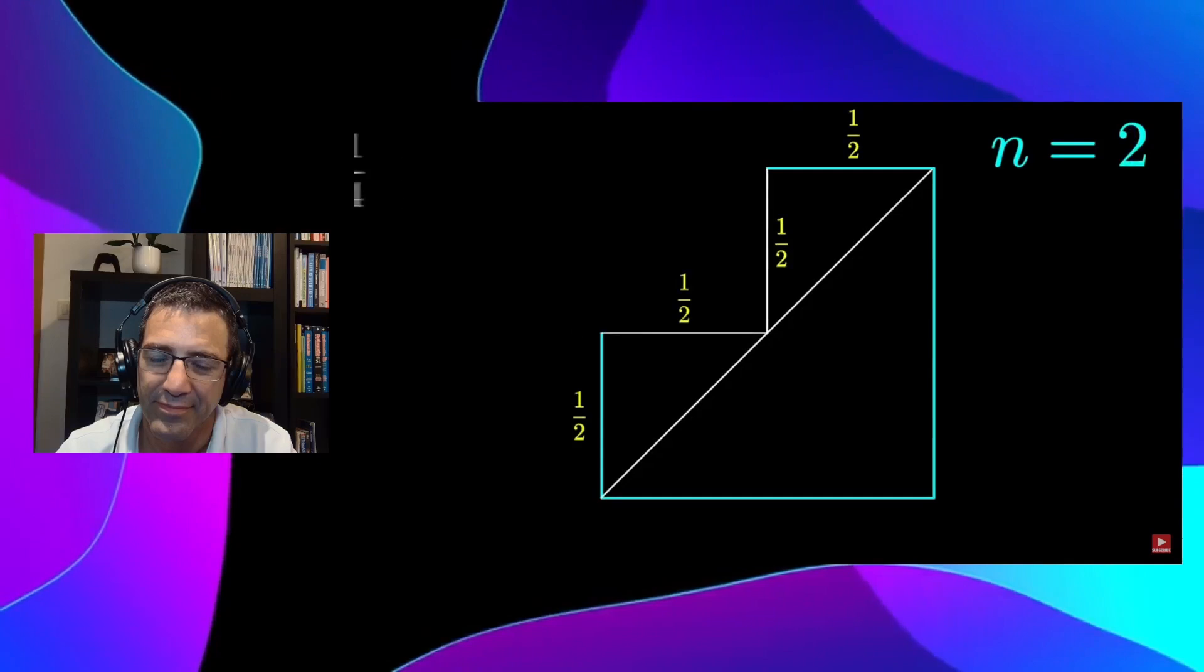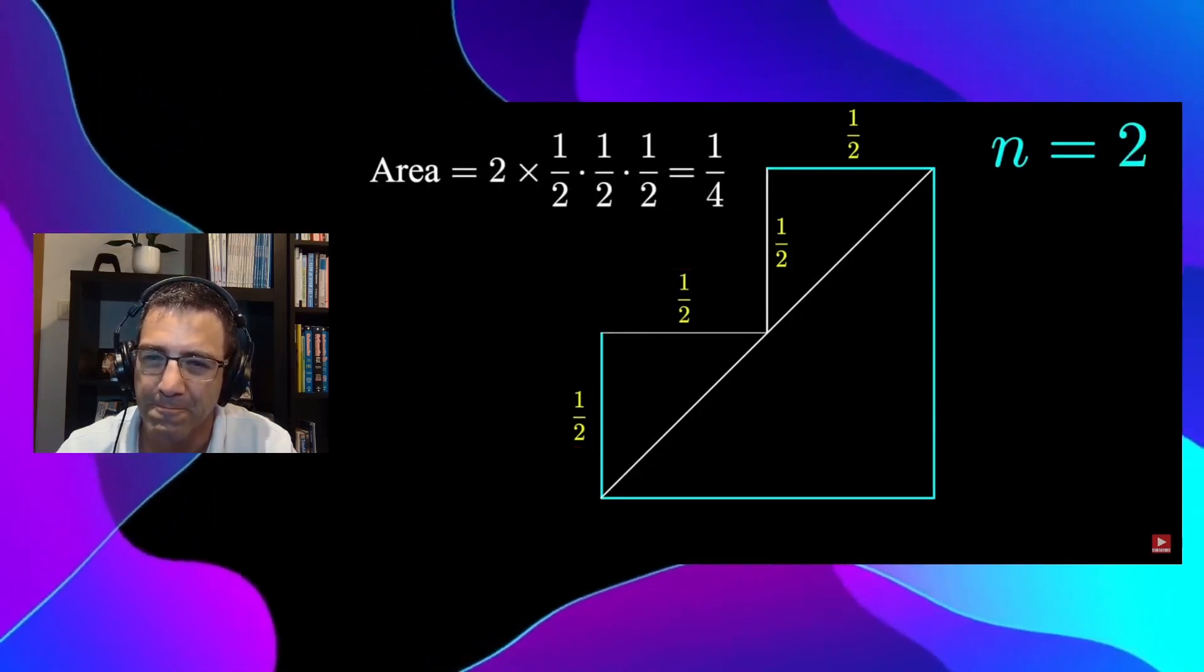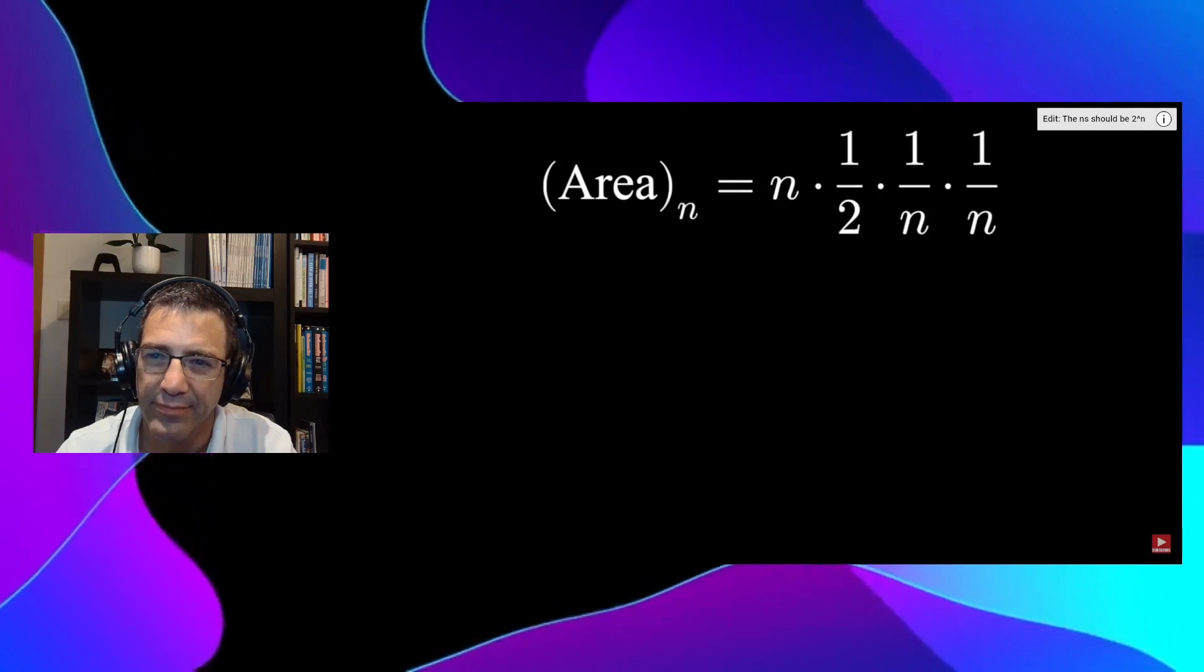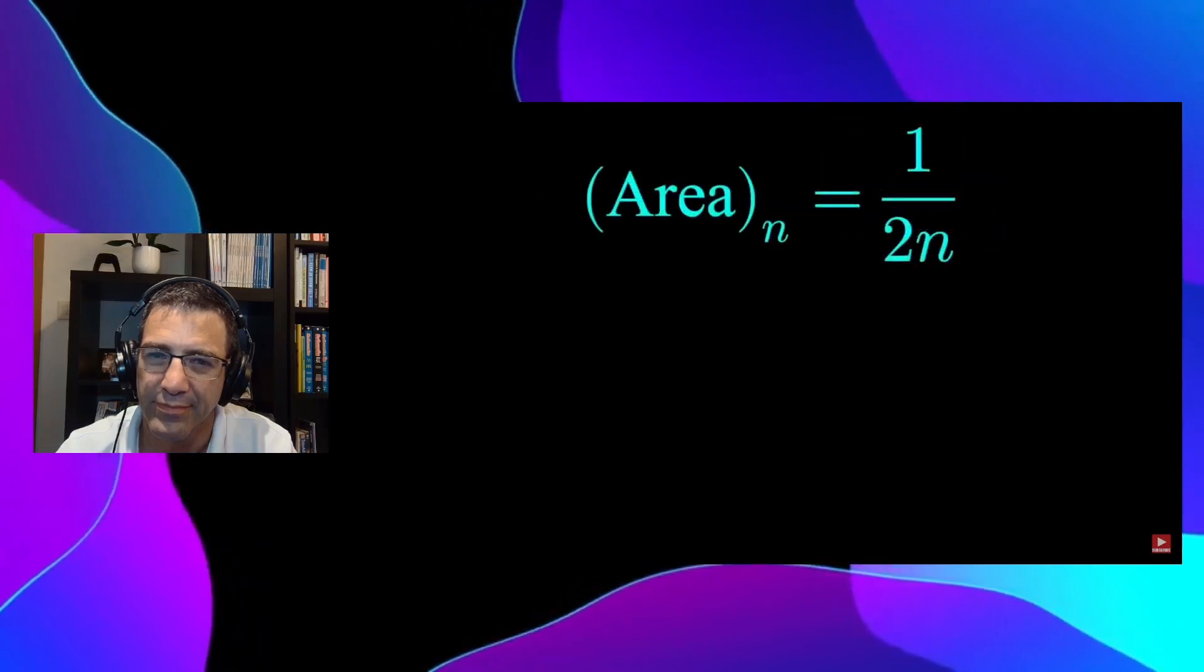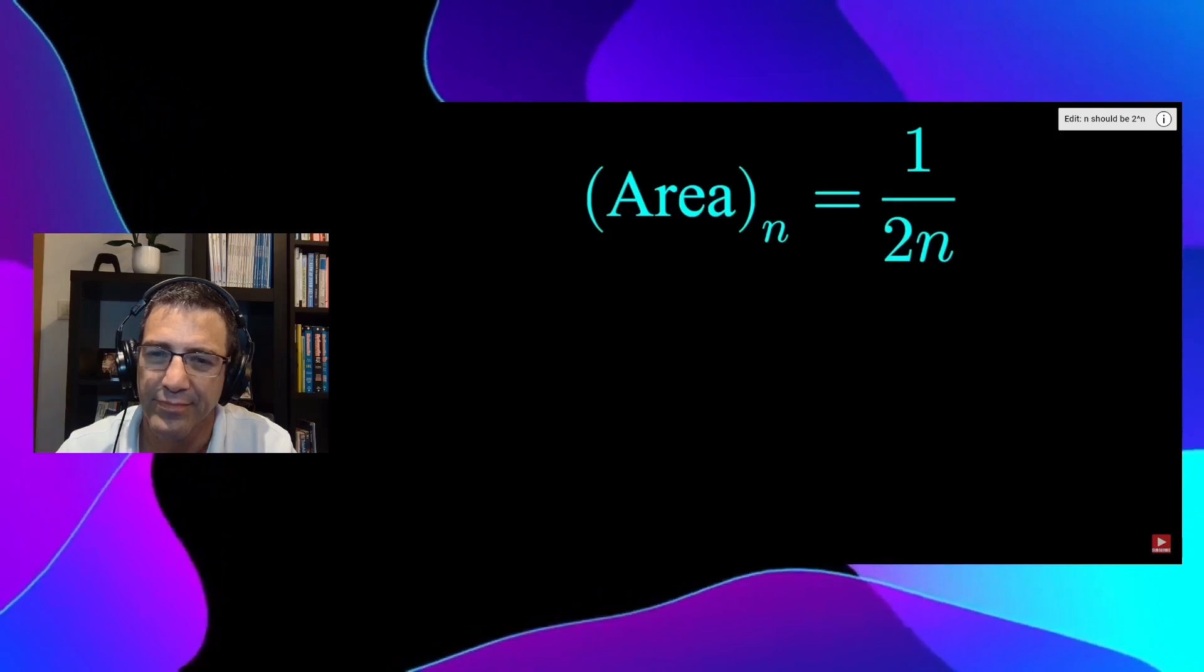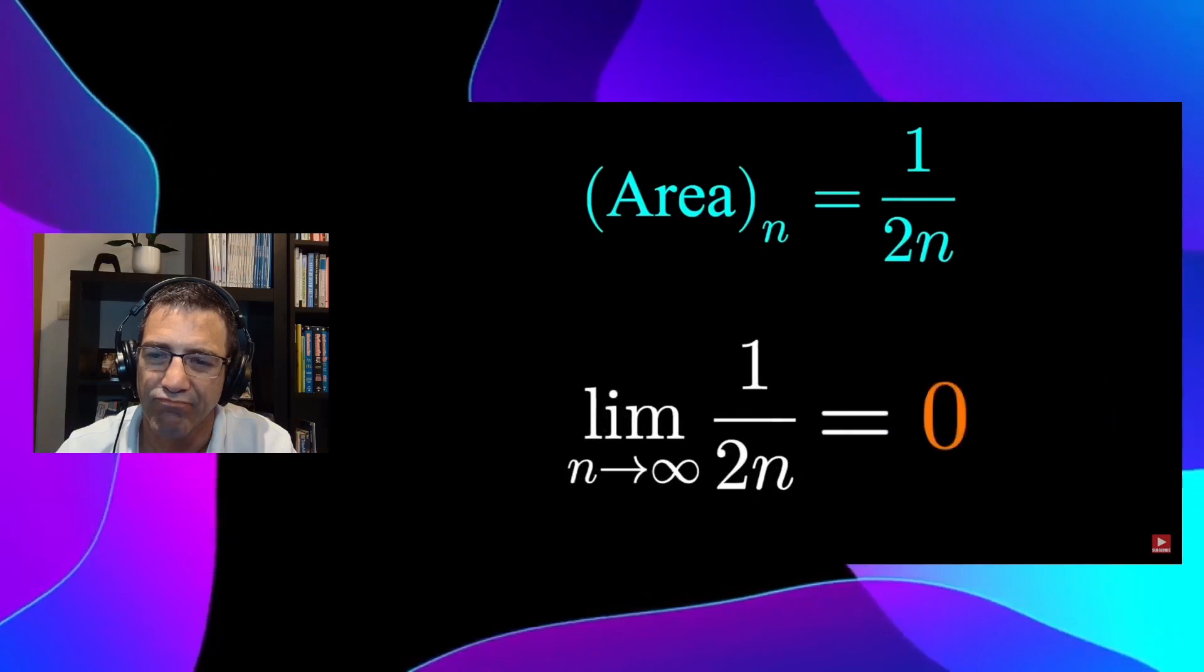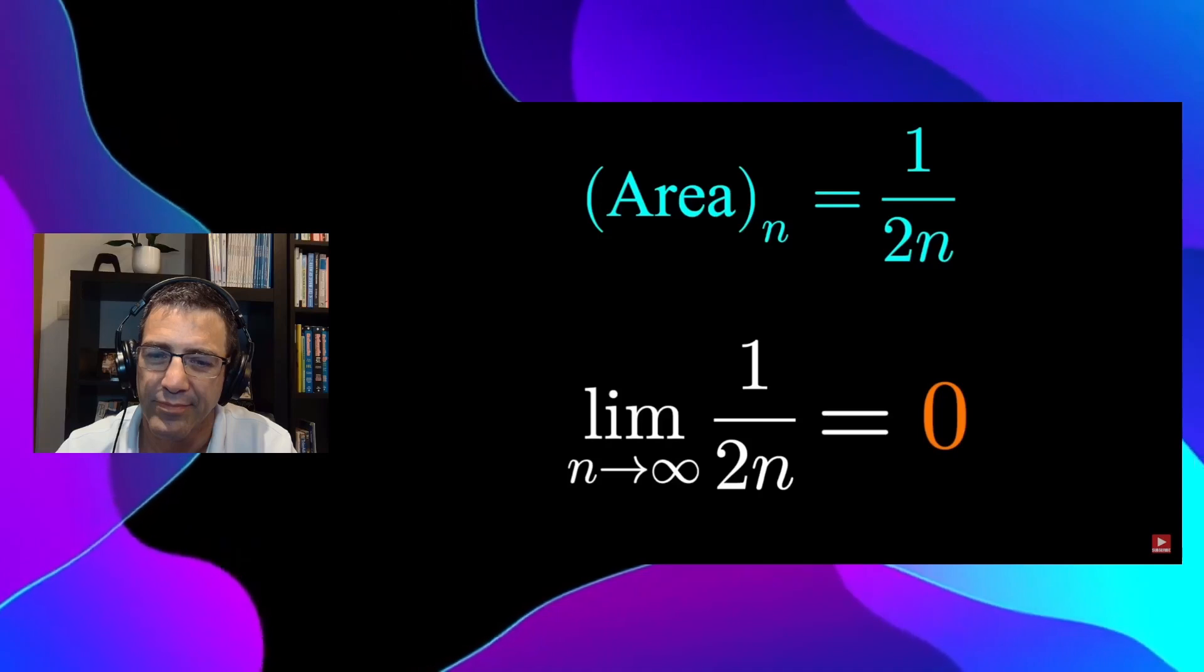So for a general n times ½ times 1 over n times 1 over n, we have n triangles, each with area ½ times height. In other words, the area of the nth iteration of our process is 1 over 2n. And we can see this area shrink to zero by taking the limit out to infinity. Thus we conclude that the staircase path does indeed approach the diagonal path.